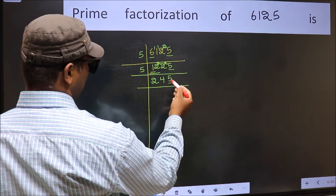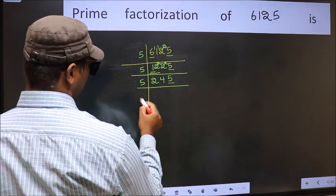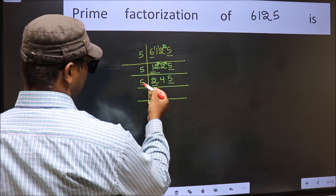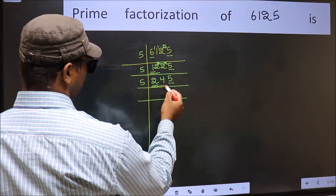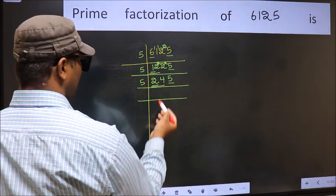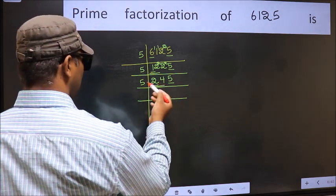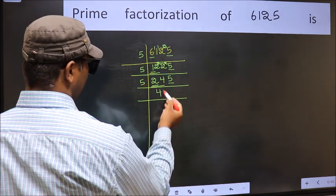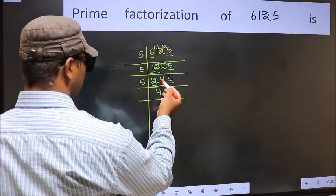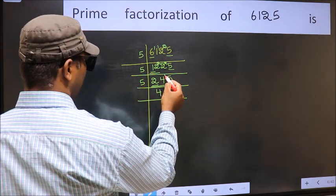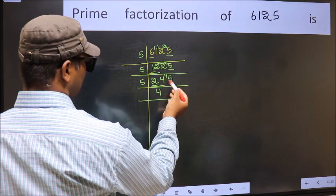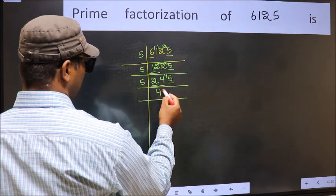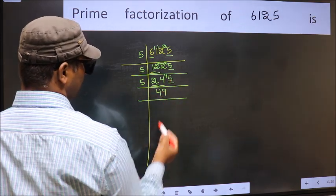Now the last digit is 5, so take 5 again. First number 2 is smaller than 5, so take 2 numbers: 24. A number close to 24 in the 5 table is 5 fours is 20. 24 minus 20 is 4, carry forward to get 45. When do we get 45 in the 5 table? 5 nines is 45.